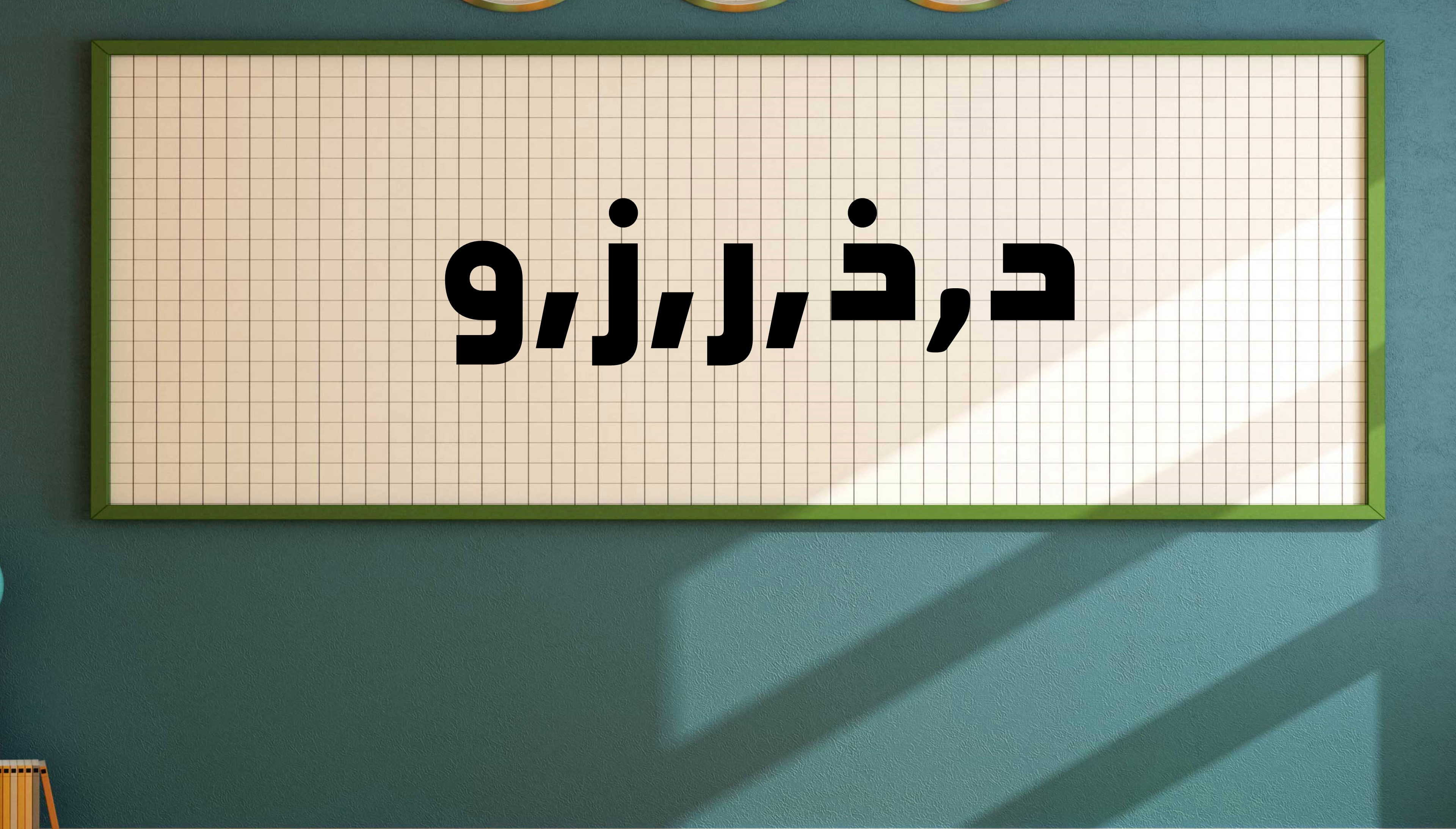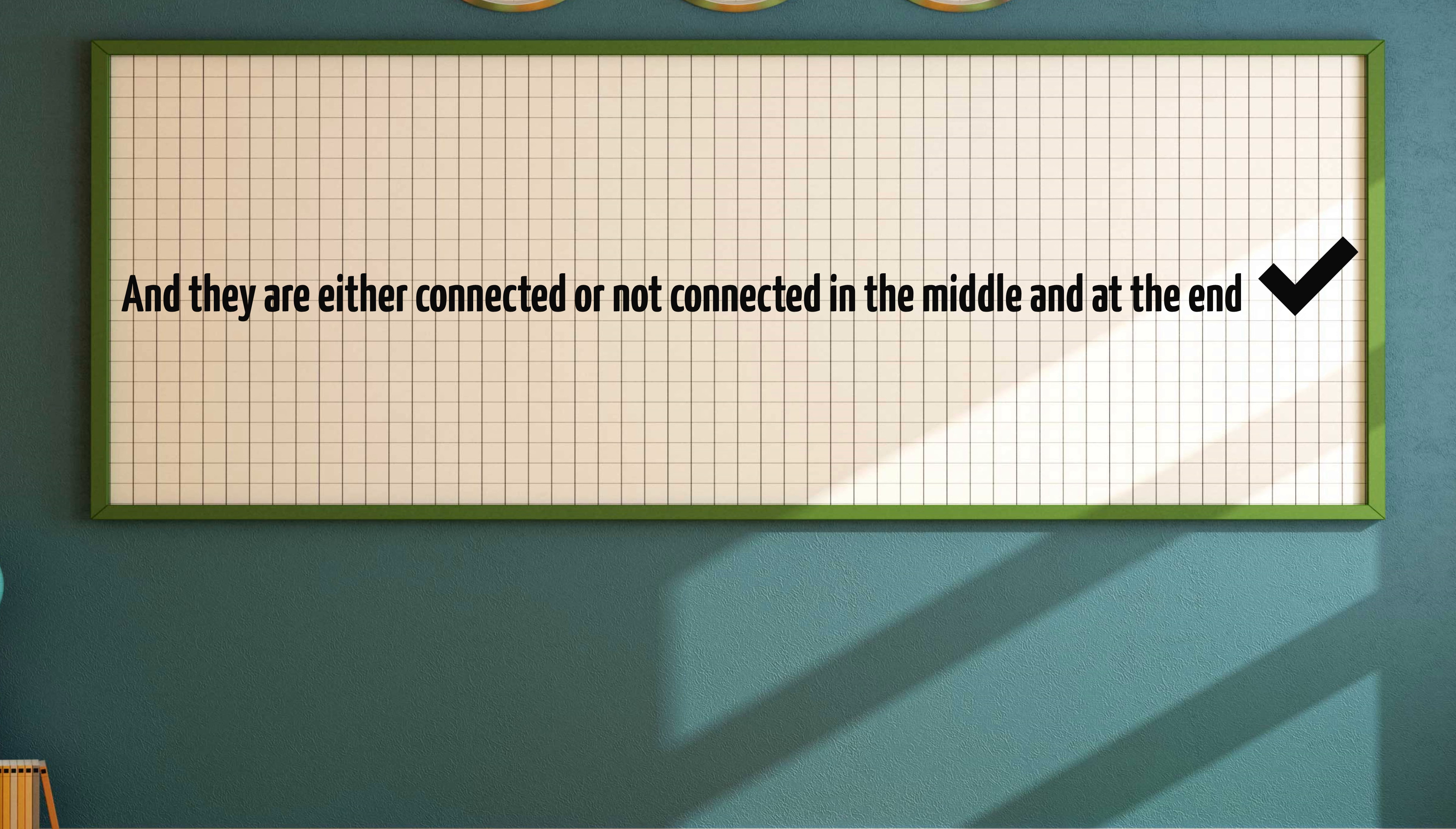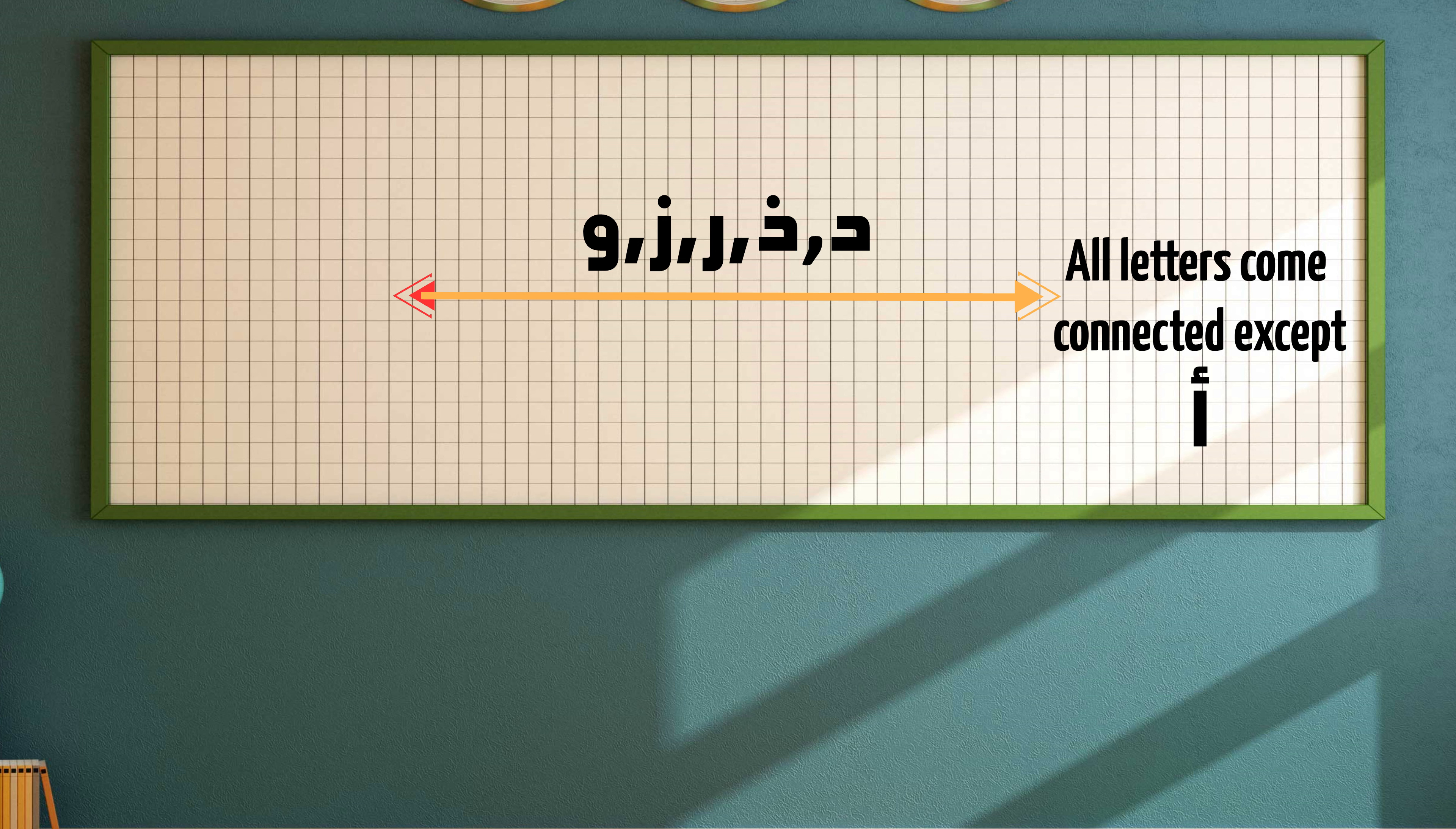Speaking of letter Dal, Thal, Ra, Zain, and Waw, all these five letters are never connected in the beginning and can be either connected or not connected in the middle and at the end. When those five letters come in connected form, all other letters are always connected to them except Alif in case they come before it. However, all other letters are never connected to those five letters if they come after them. All right guys, now that we talked about letter connections, let's move on and give a quick summary on the whole course.